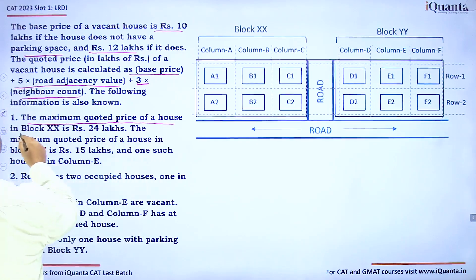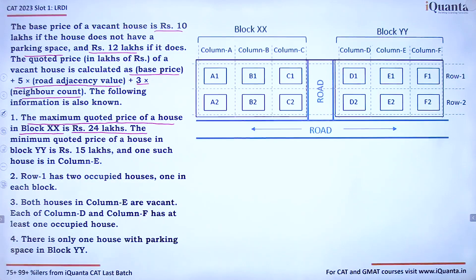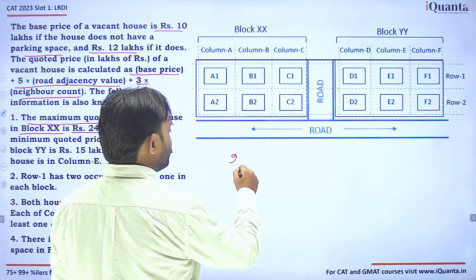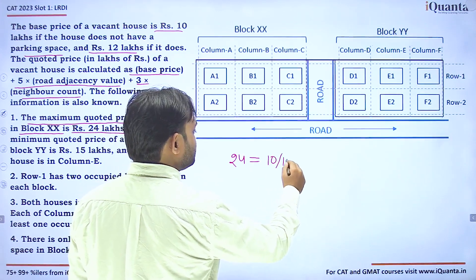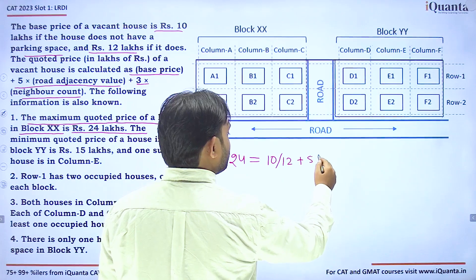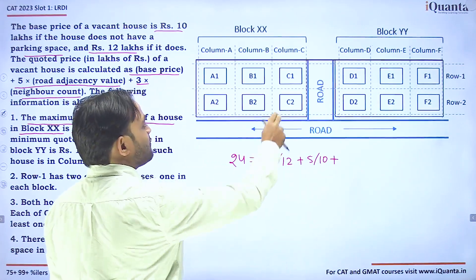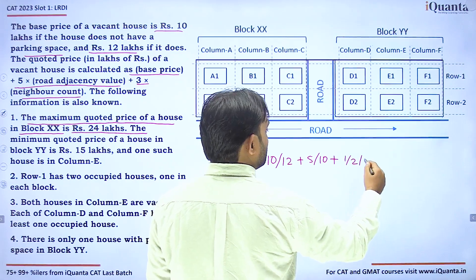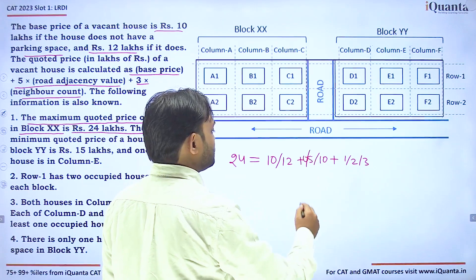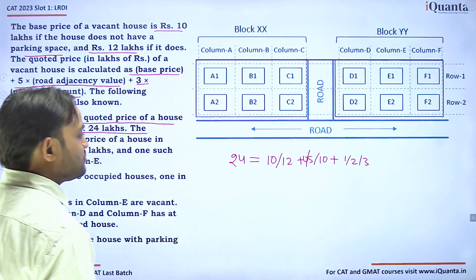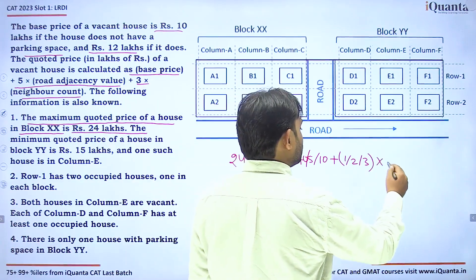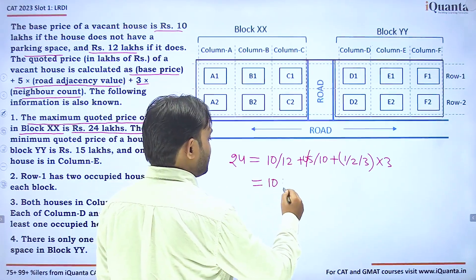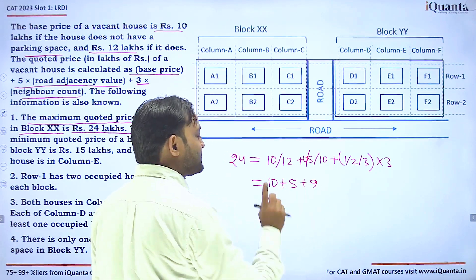The maximum quoted price of a house in Block XX is 24 lakhs. To figure out how we get 24, the base price can be 10 or 12, road adjacency contributes 0 or 5 or 10, and neighbor count contributes 0, 3, 6, or 9. We need to find which combination gives exactly 24.